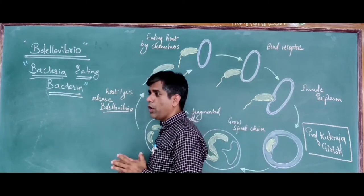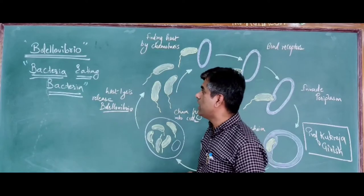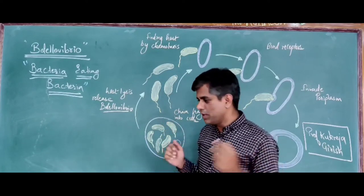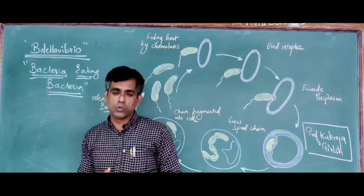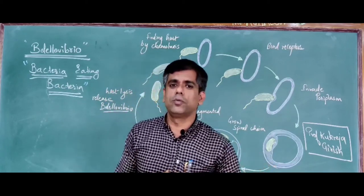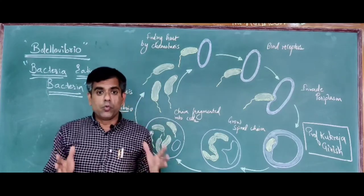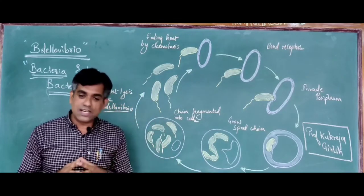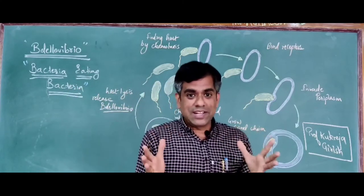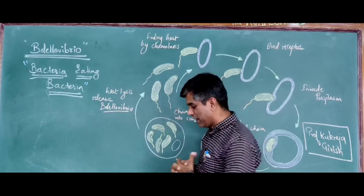Today we will be talking about a group of bacteria called Bdellovibrio, discovered long back in 1962. One of the most studied species is Bdellovibrio bacteriovorus — as the name suggests, this is a bacteria which is going to eat another bacteria. Literally, it is going to eat the bacteria.